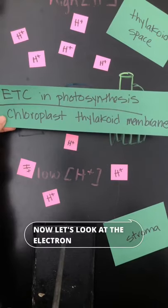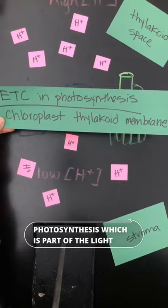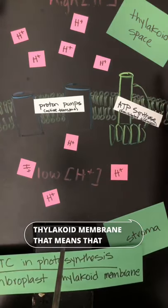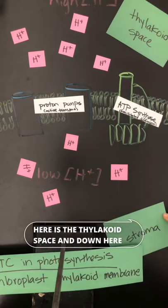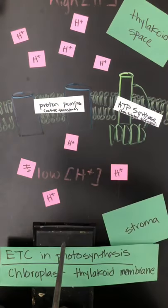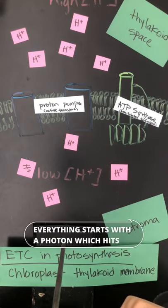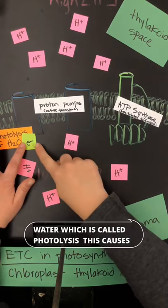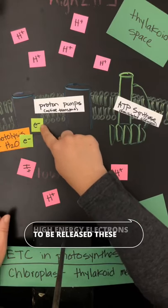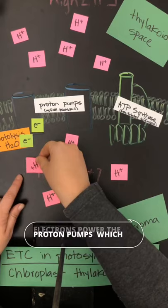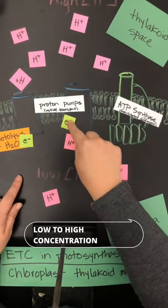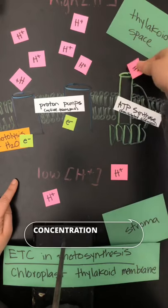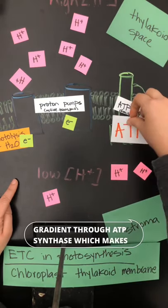Now let's look at the electron transport chain in photosynthesis, which is part of the light dependent reactions. This happens in the thylakoid membrane. That means that up here is the thylakoid space and down here is the stroma. Everything starts with a photon, which hits chlorophyll, which causes the splitting of water, which is called photolysis. This causes high energy electrons to be released. These electrons power the proton pumps, which move hydrogens from low to high concentration. The hydrogens then move back down their concentration gradient through ATP synthase, which makes ATP.